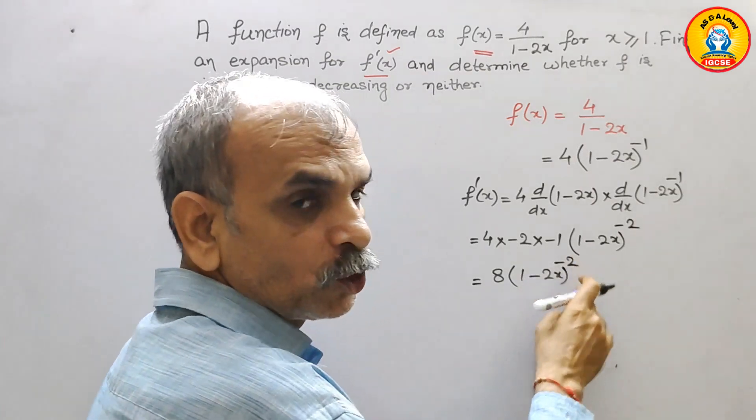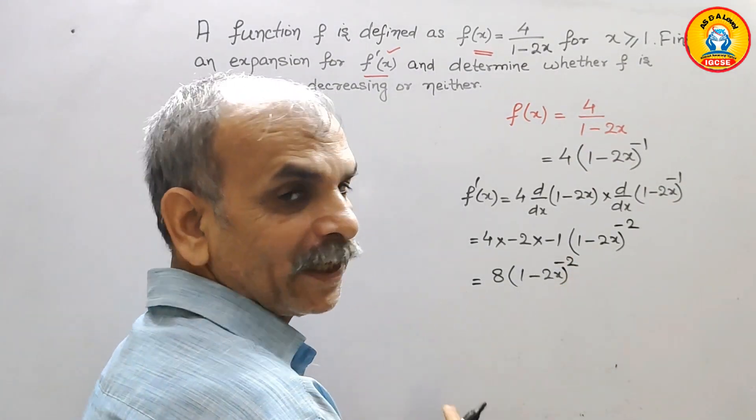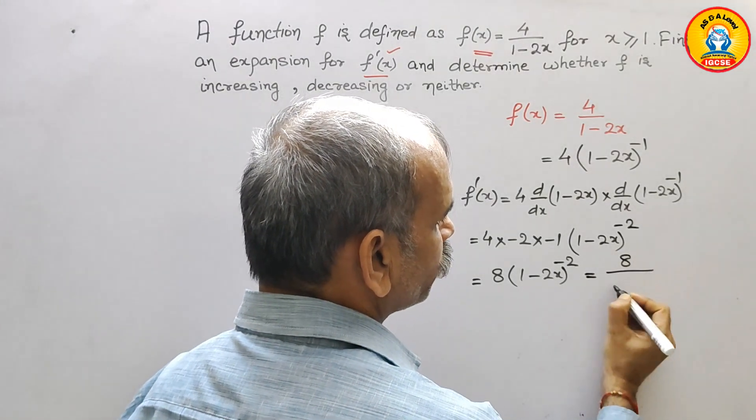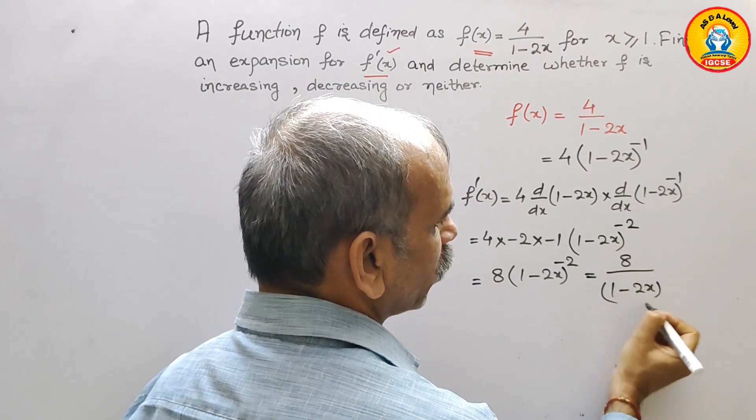Now we will bring this to denominator because power is negative. So therefore you will get 8 over (1 minus 2x) whole square.